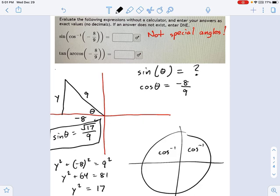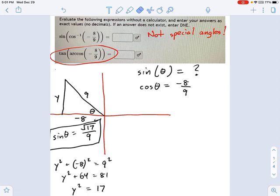Now, the next part of it says, what's the tangent? What's the tangent right there? So for that one, all you do is you take the triangle you've already drawn, and then you take the tangent of it. So tangent of theta equals opposite over adjacent, or in other words, the square root of 17 over negative eight.